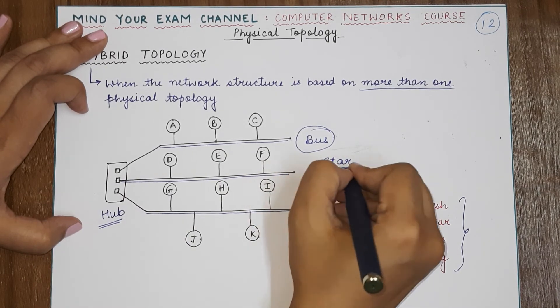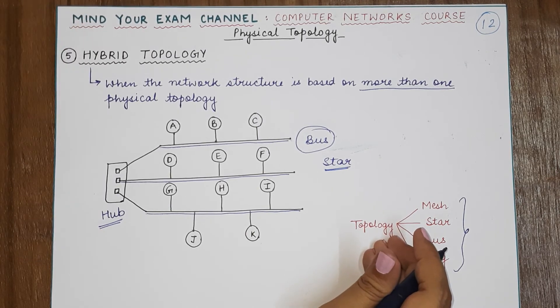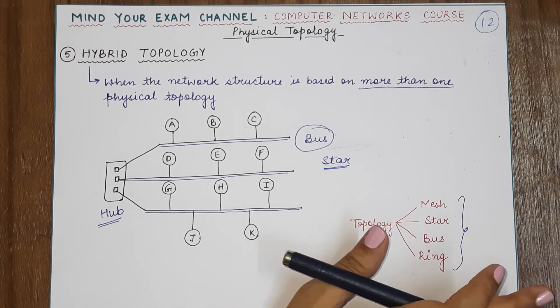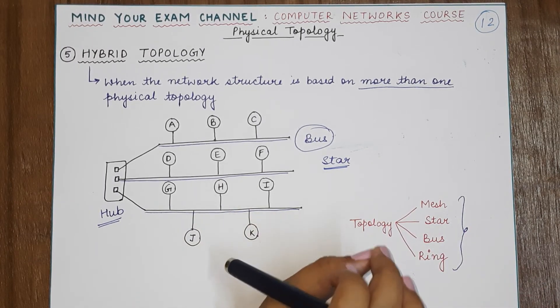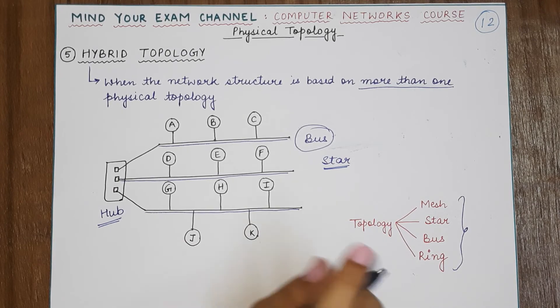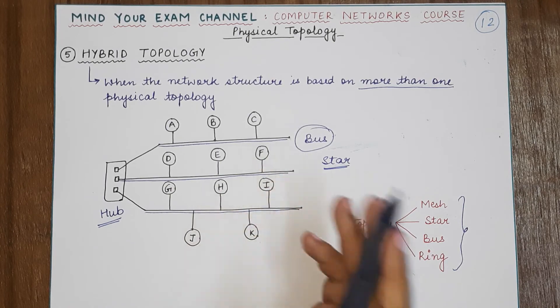Okay, so you can develop different combinations as per requirements. There is no restriction on how a hybrid topology will be developed or what will be its exact structure. This is one of the examples of a hybrid topology.